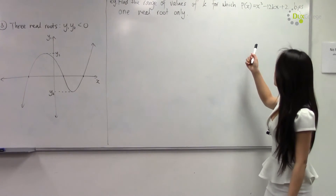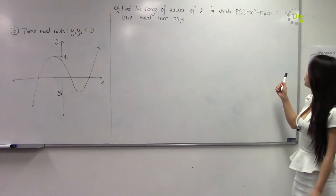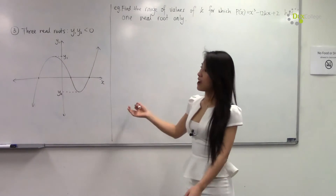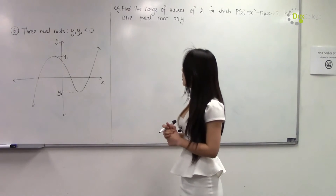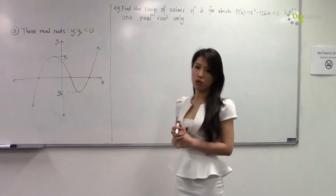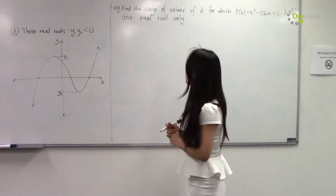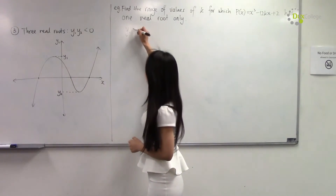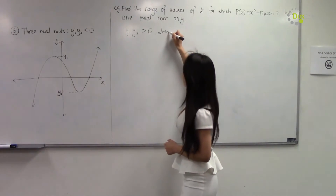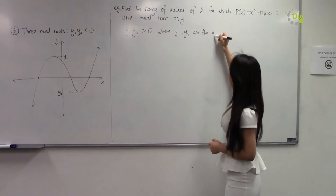In this example, find the range of values of k for which p(x) = x³ - 12kx + 2 has one real root only. Let's apply this method: in order for a cubic polynomial to have one real root only, we want the product of the y-values of the stationary points to be greater than zero — that is, y₁ · y₂ > 0, where y₁ and y₂ are the y-values of the stationary points.